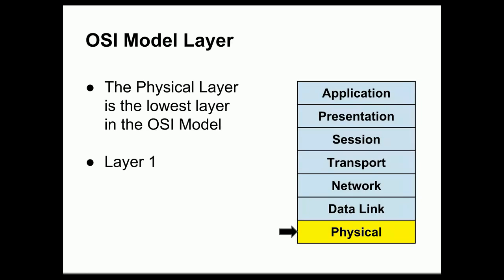The physical layer is at the lowest layer of the OSI model — this is layer one. This is the layer of the conceptual OSI model on which all the other layers are built. In practice, this is also the layer that contains the networking hardware. The remaining layers can be implemented as software layers on top of that hardware.